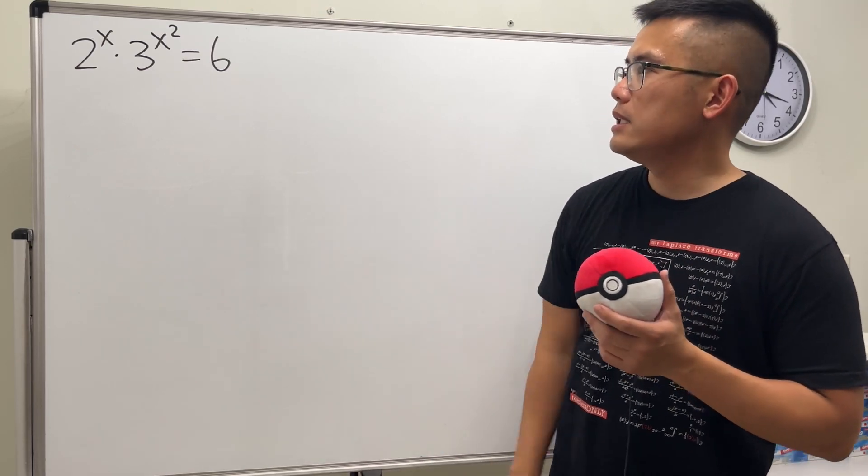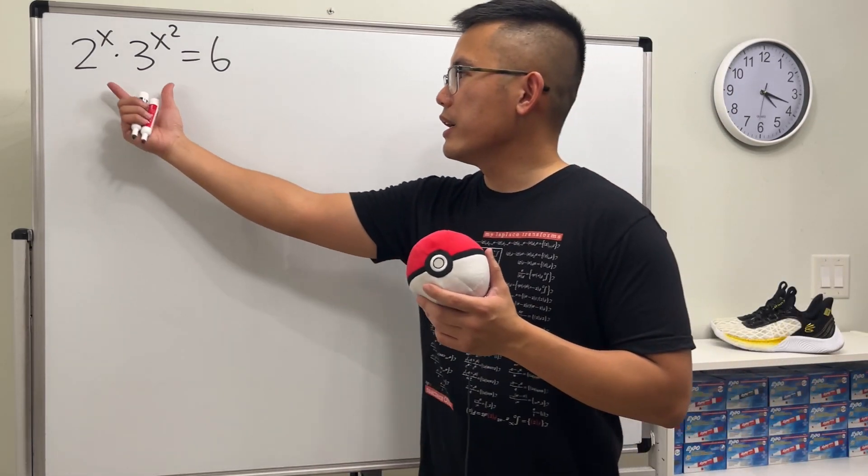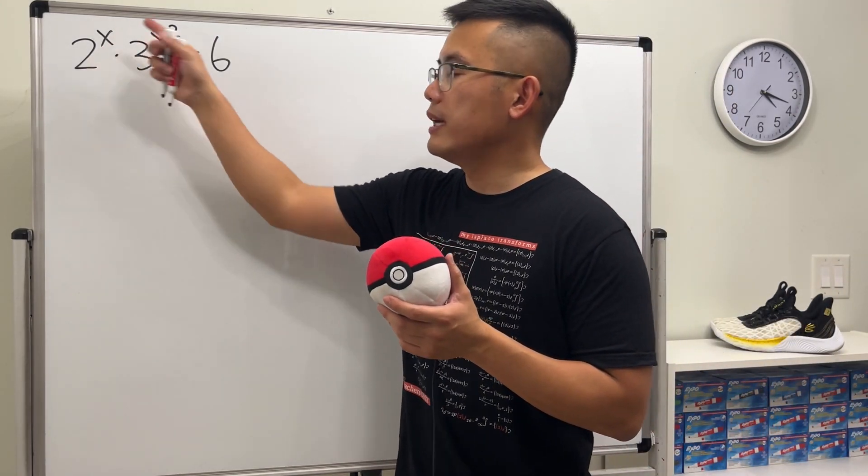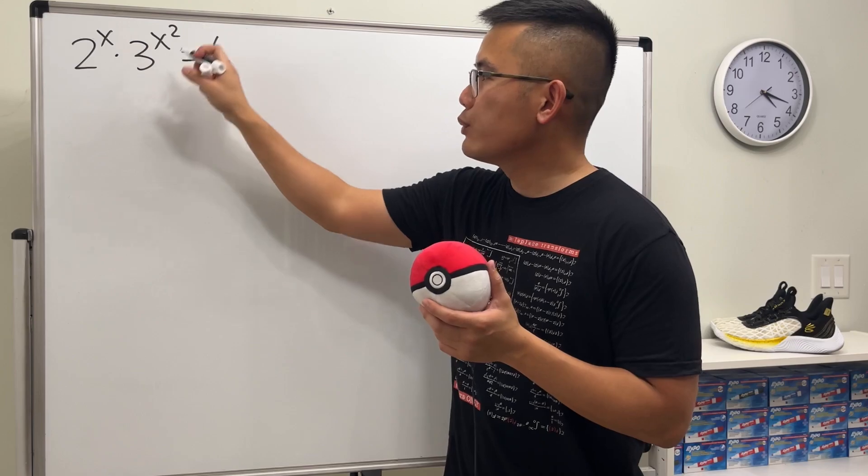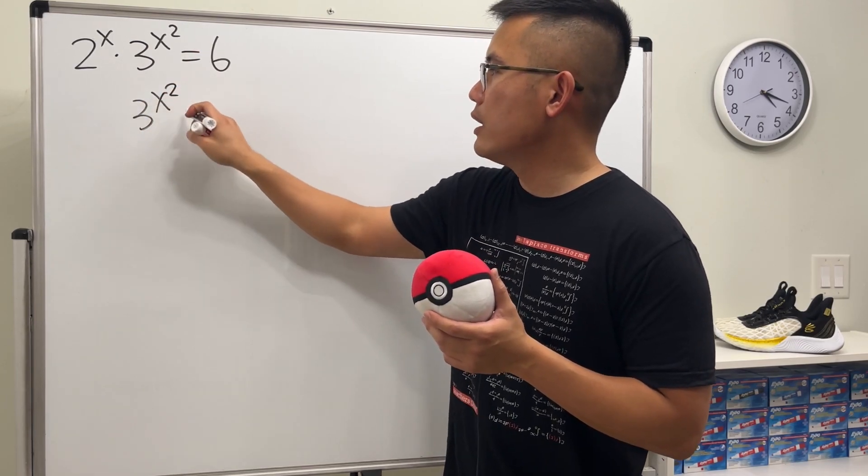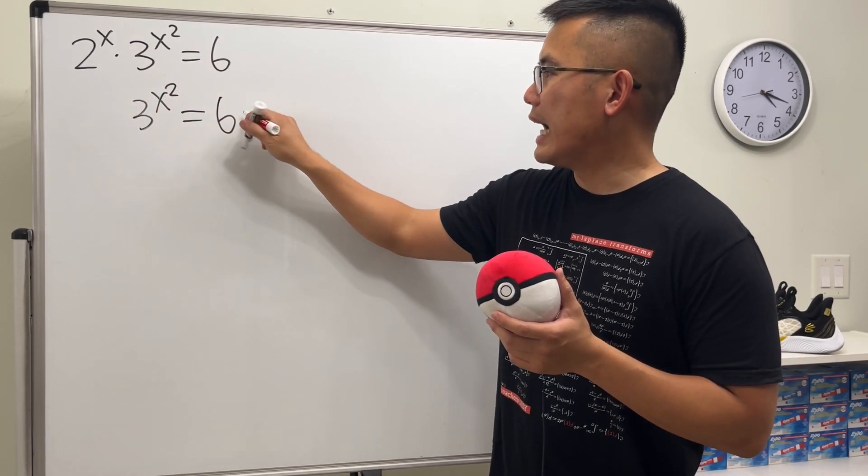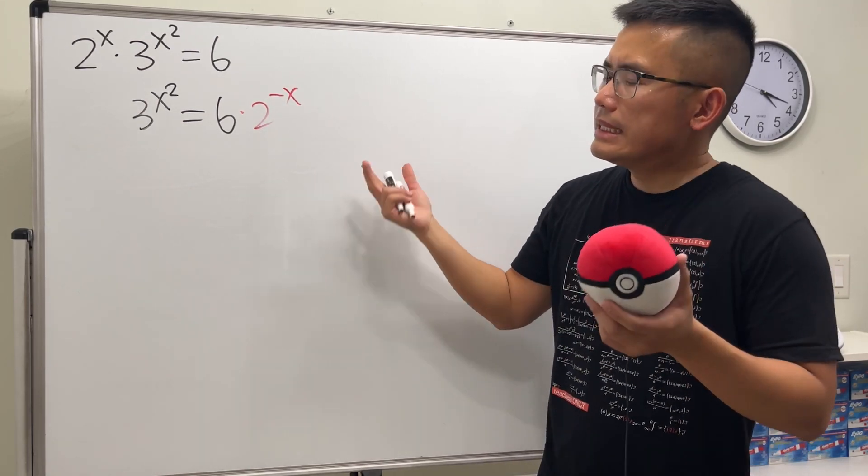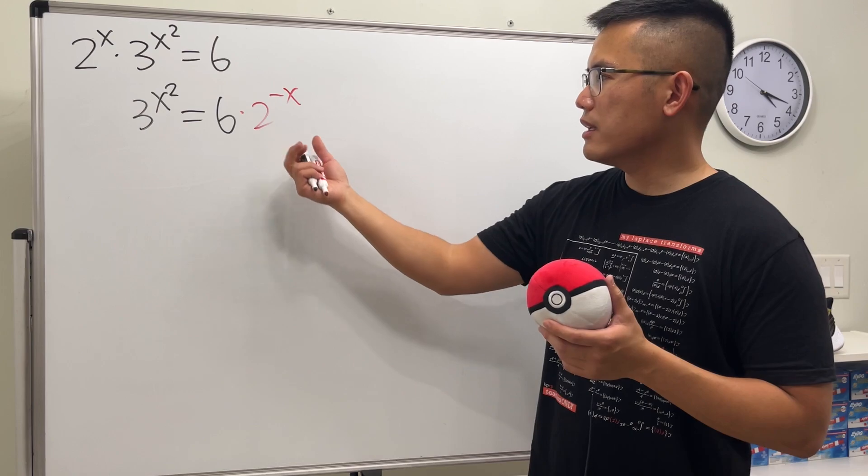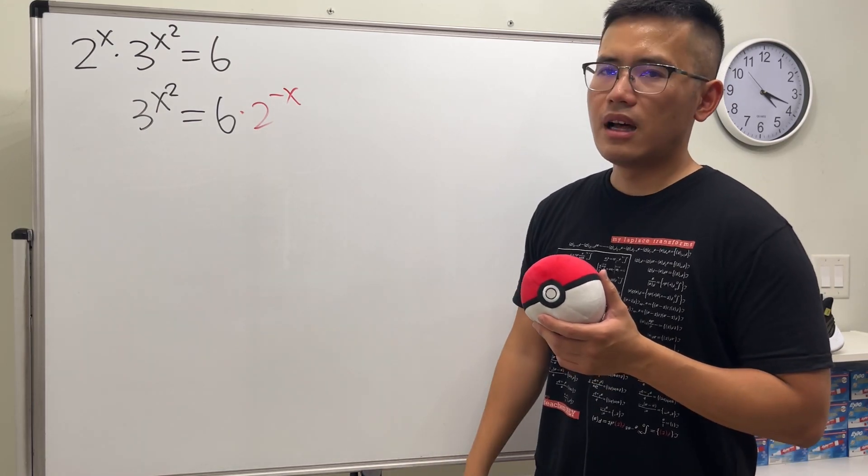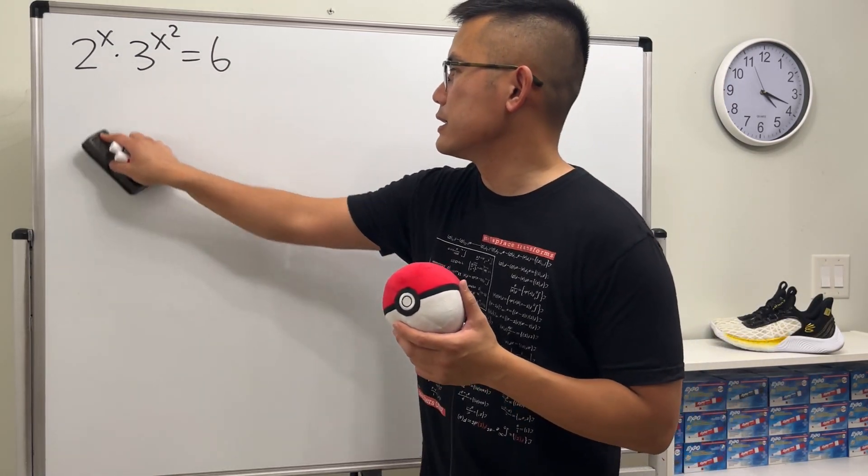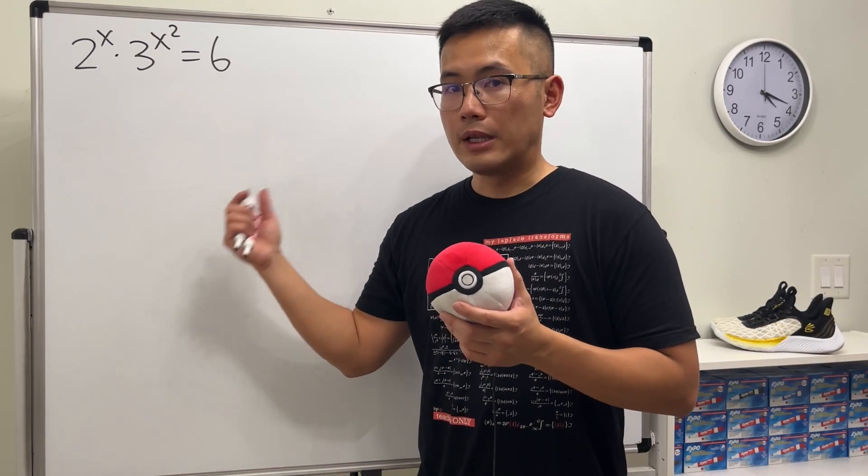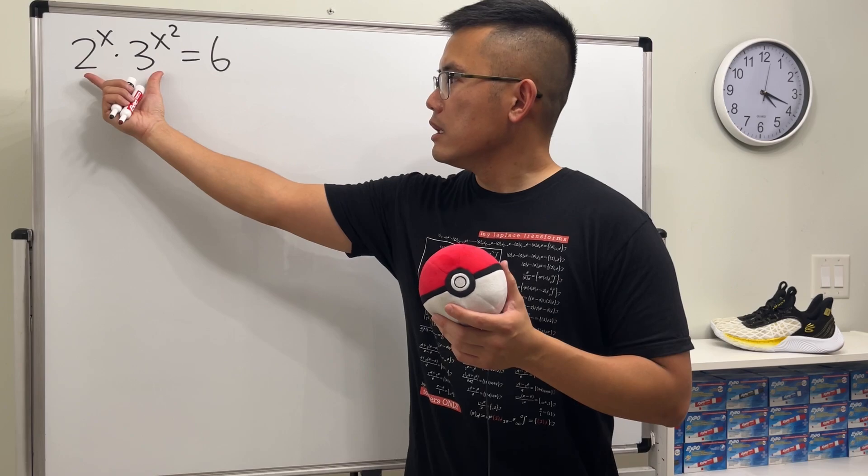Done? Alright let's see. Unfortunately we cannot combine this yet. Maybe we can try to divide the 2 to the x on both sides, but if we do that we'll end up with 3 to the x squared equals 6 times 2 to the negative x. But we still cannot do anything. We cannot combine, cannot take the log. In fact I'm not going to do this. So let's go back. Our best bet is to combine these two parts.